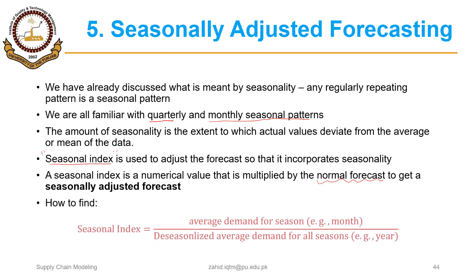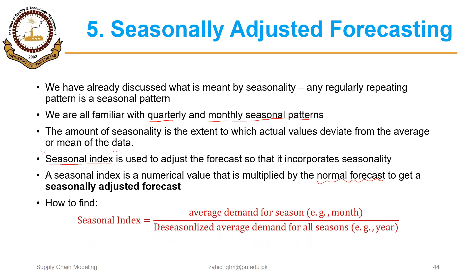The seasonal index is the ratio of the average demand for a season — for example, a month — divided by the de-seasonalized average demand for all seasons. For example, the seasonal index for January could be the average demand for January during the previous few years divided by the de-seasonalized demand for all months of the year. The season could again be a day of the week or a quarter as well.